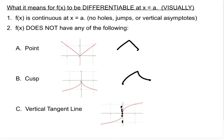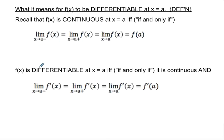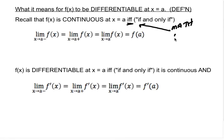So what does differentiable mean at x equals a based on the definition? Recall that continuity at x equals a is when the left-sided limit of f, the right-sided limit of f, the double-sided limit of f, and the actual function value of f are all the same. Notice the notation 'iff' — I-F-F — it means 'if and only if.' It is an actual math notation; when you see it, you read it as 'if and only if.'